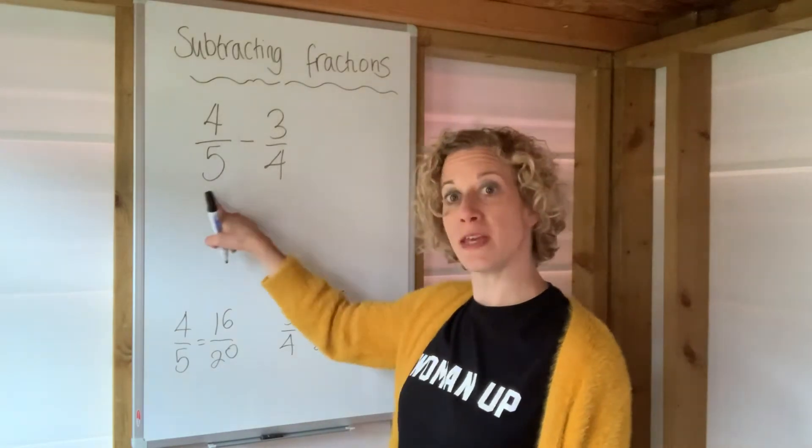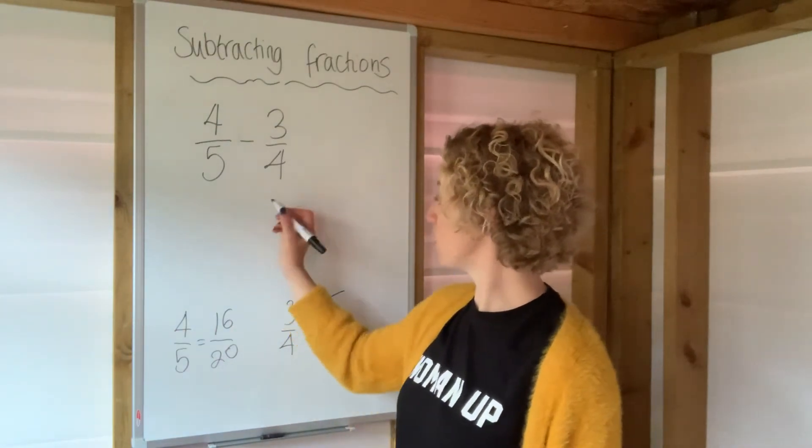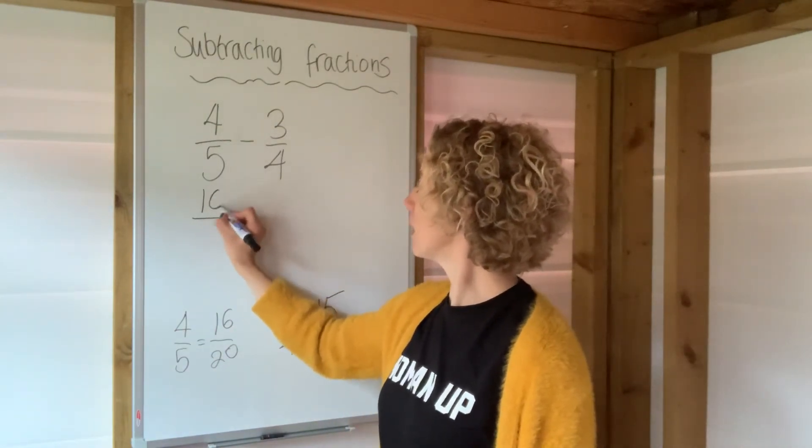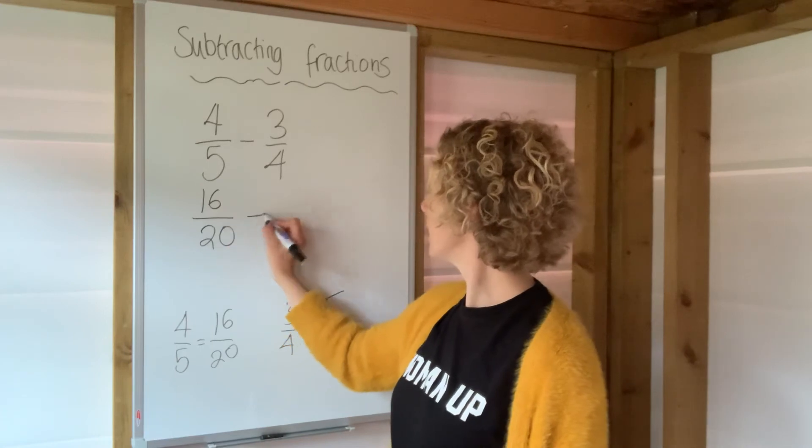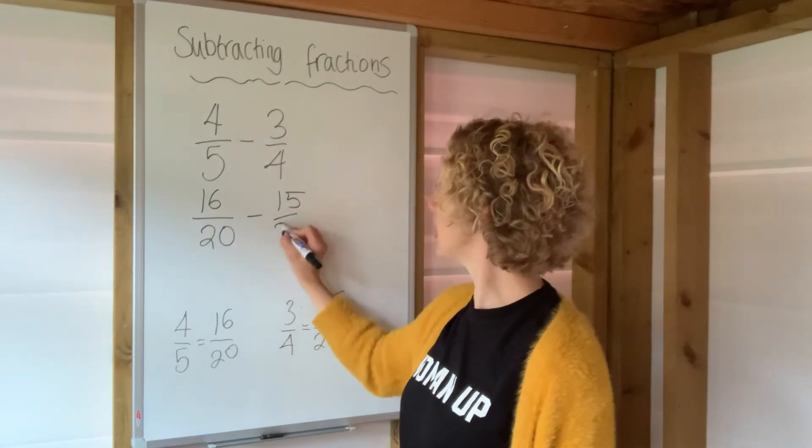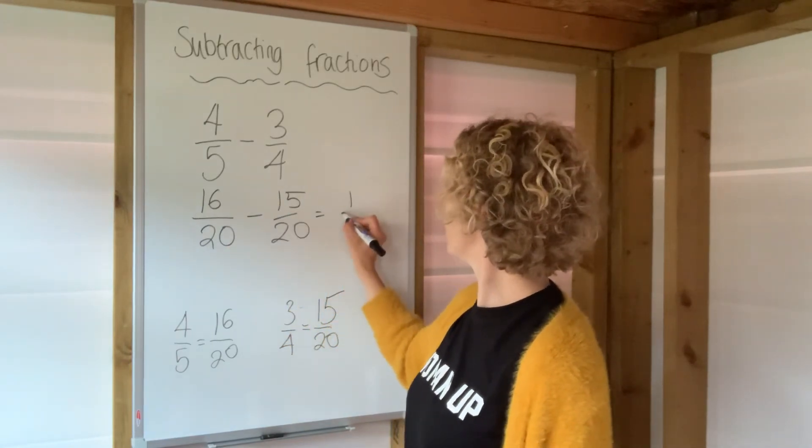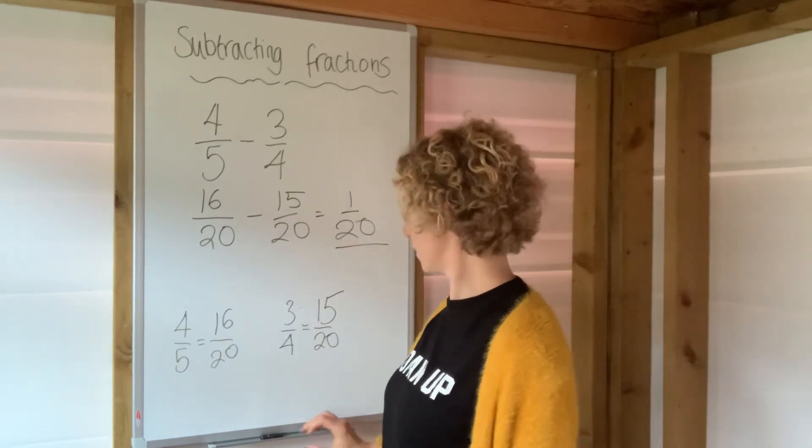Now, I'm going to swap these two fractions for the new fractions with 20 on the bottom. So, 16 over 20 take away 15 over 20 is 1 over 20, and that's the answer.